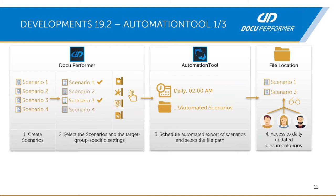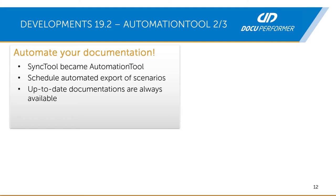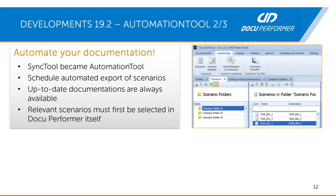The next question is how you can access this automation tool. The sync tool becomes the automation tool — in the past, only synchronizations could be scheduled with the sync tool. But if you update the sync tool with the new version 19.2, or install it completely new, then you will also have the automation tool on your laptop. The scenarios must be selected together with the target-group-specific settings in the DocuPerformer.